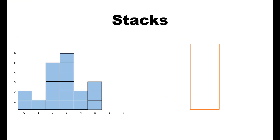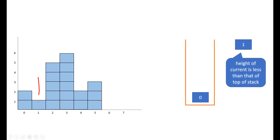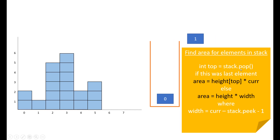The stack approach is somewhat similar to the one we saw in the trapping rainwater question. We take a stack and keep adding indexes to it as long as we get an increasing sequence. Once the sequence becomes decreasing we pop the elements and find the area. When at index 1 the current height becomes less than the top of the stack, which is index 0, the sequence becomes decreasing. We find the area for elements in the stack by popping the element — the area becomes the height of top multiplied by i current if the stack is empty, otherwise we find width as right minus left minus 1 and multiply by the height of the top element.